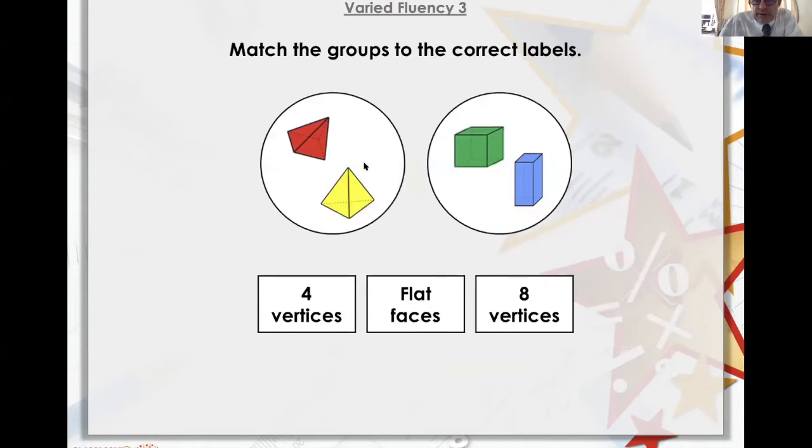Match the groups to the correct labels. Four... Oh, that's points. Vertices are points. One, two, three, four vertices. One, two, three, four, five vertices.